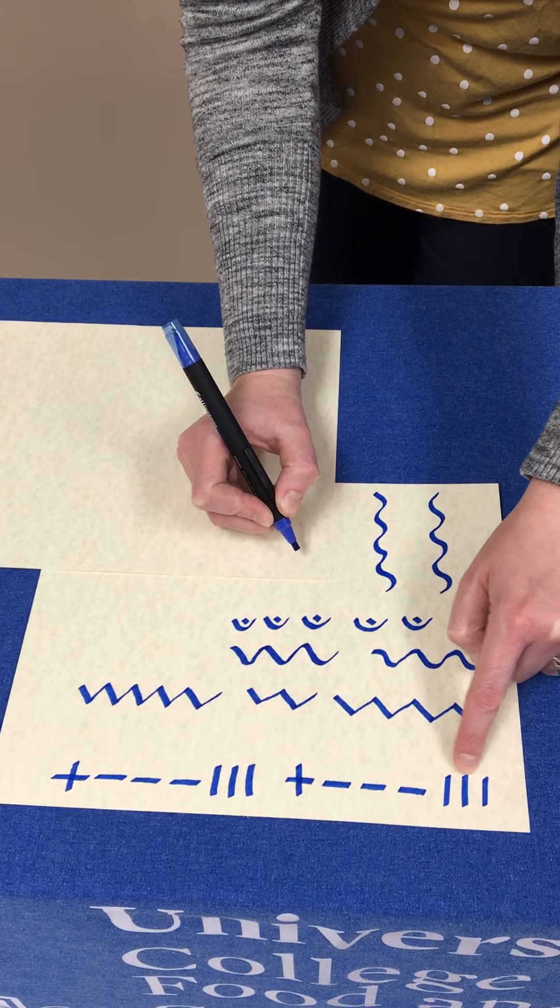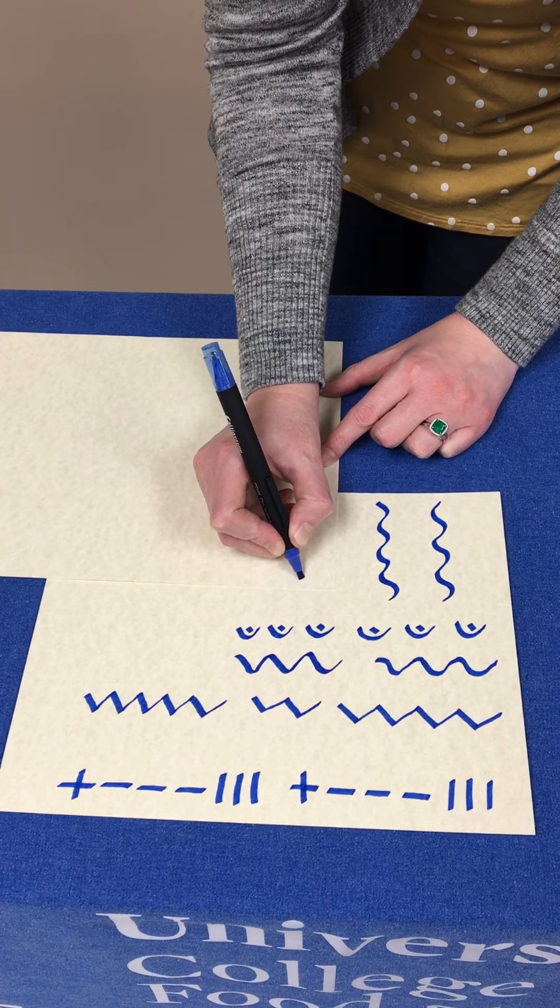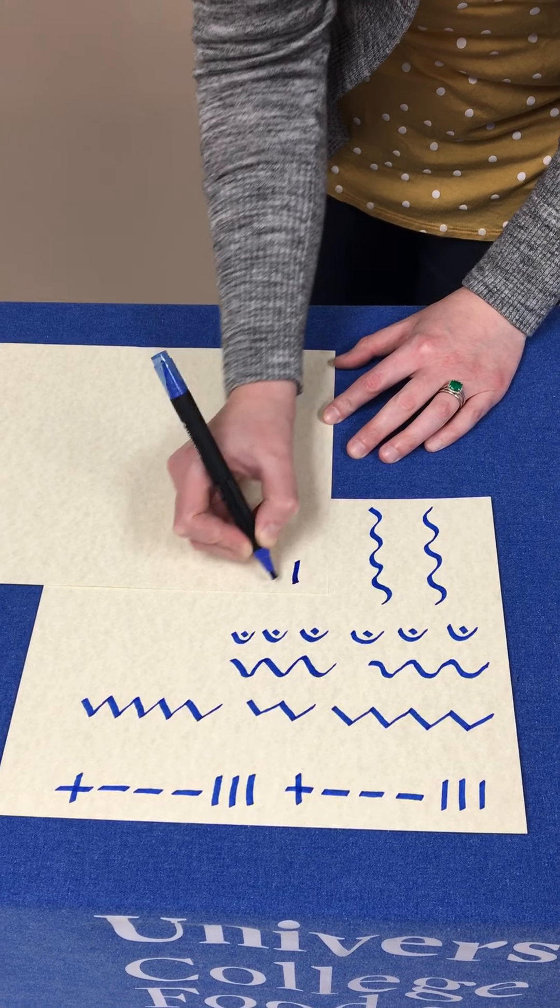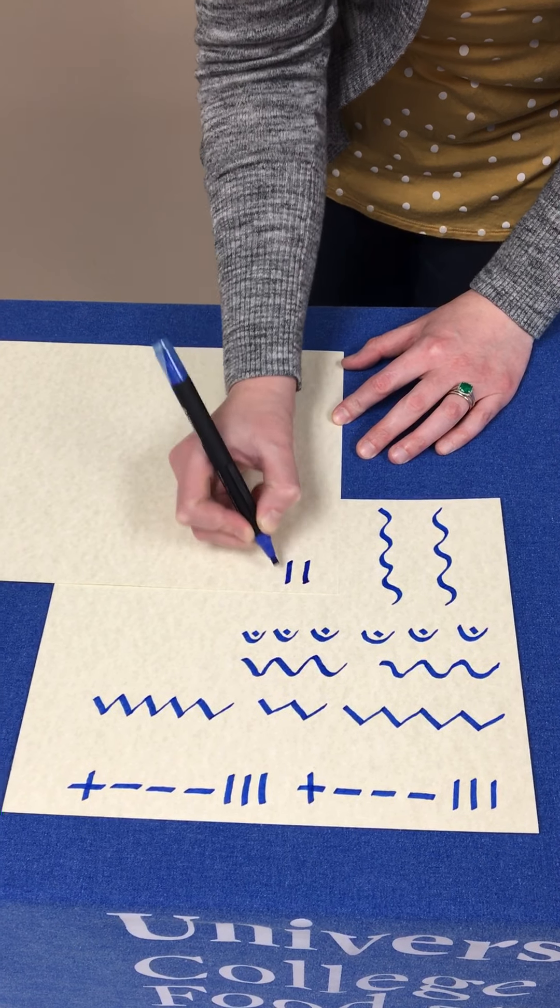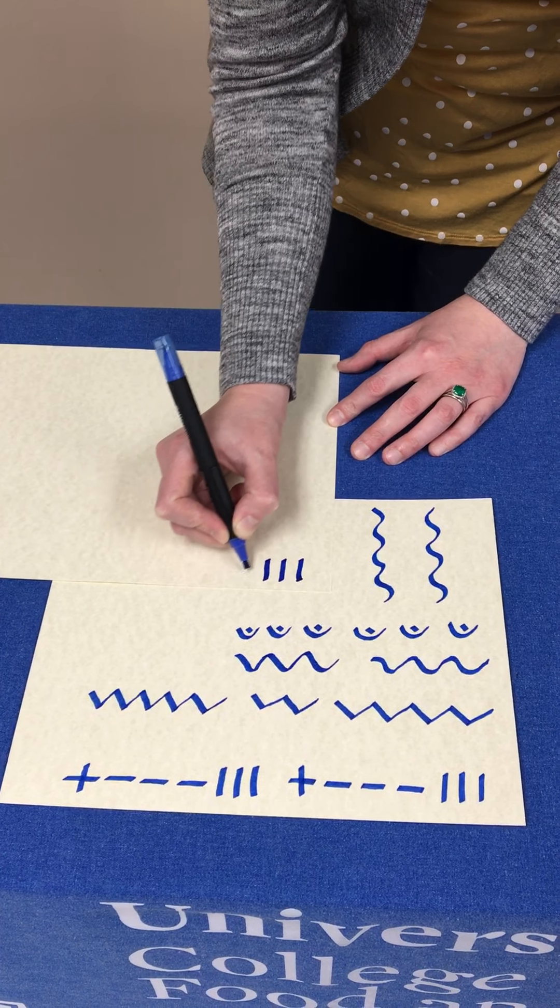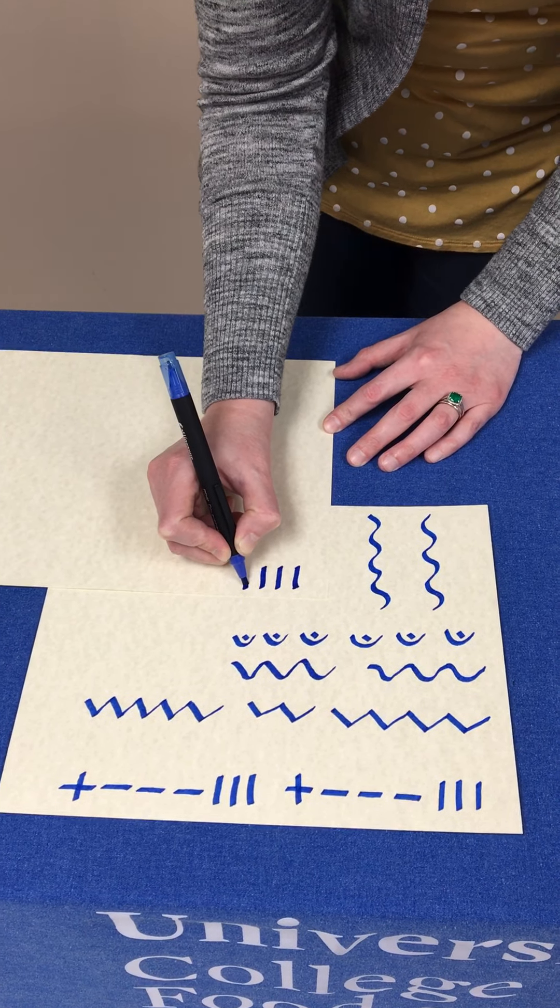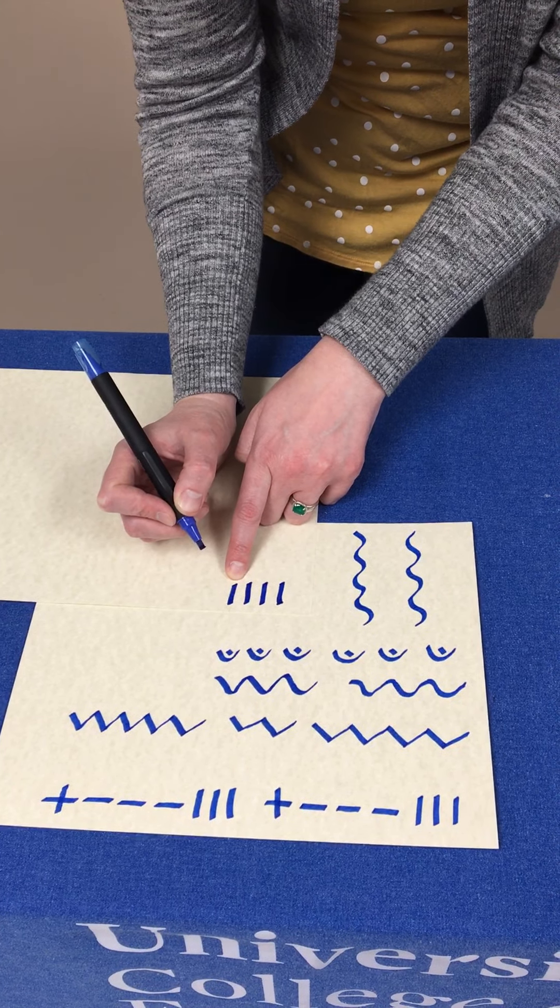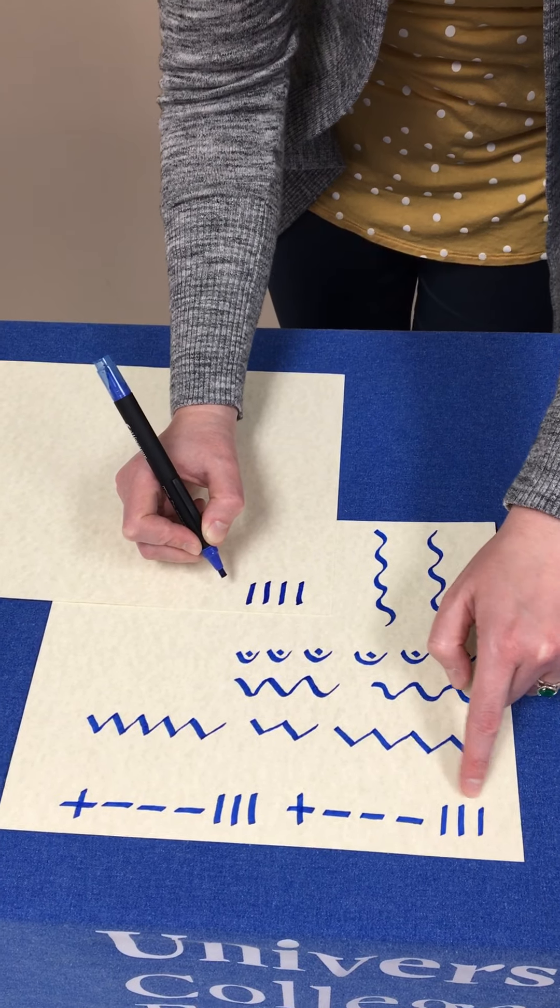Alright, so we're going to start off with just some vertical lines. You can see that I'm holding that broad end a little bit at an angle and pulling down, and you want the letter or the line to be straight up and down. You don't want it at a curve right now, and you can see that I'm starting and ending on a little bit of an angle there.